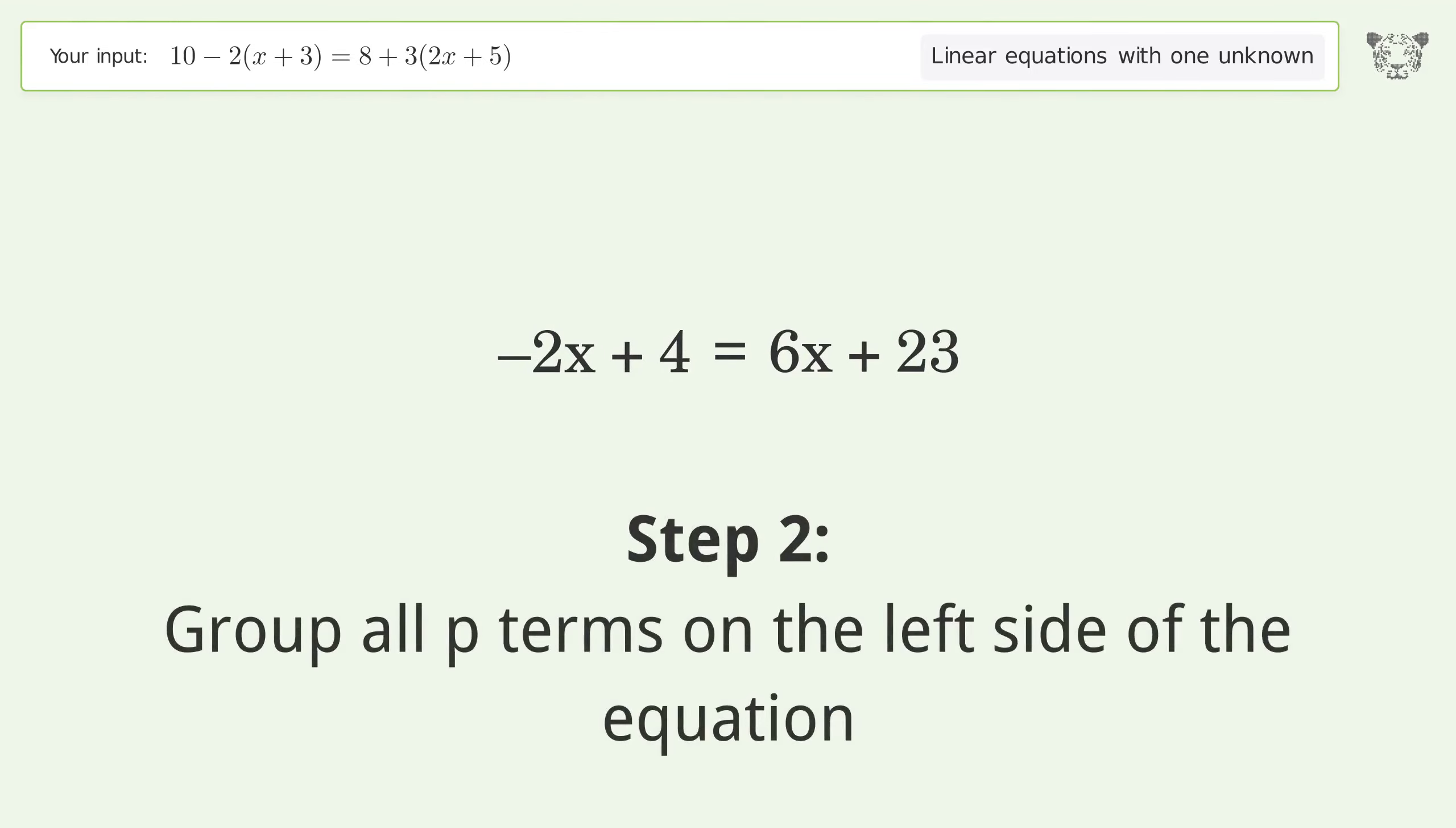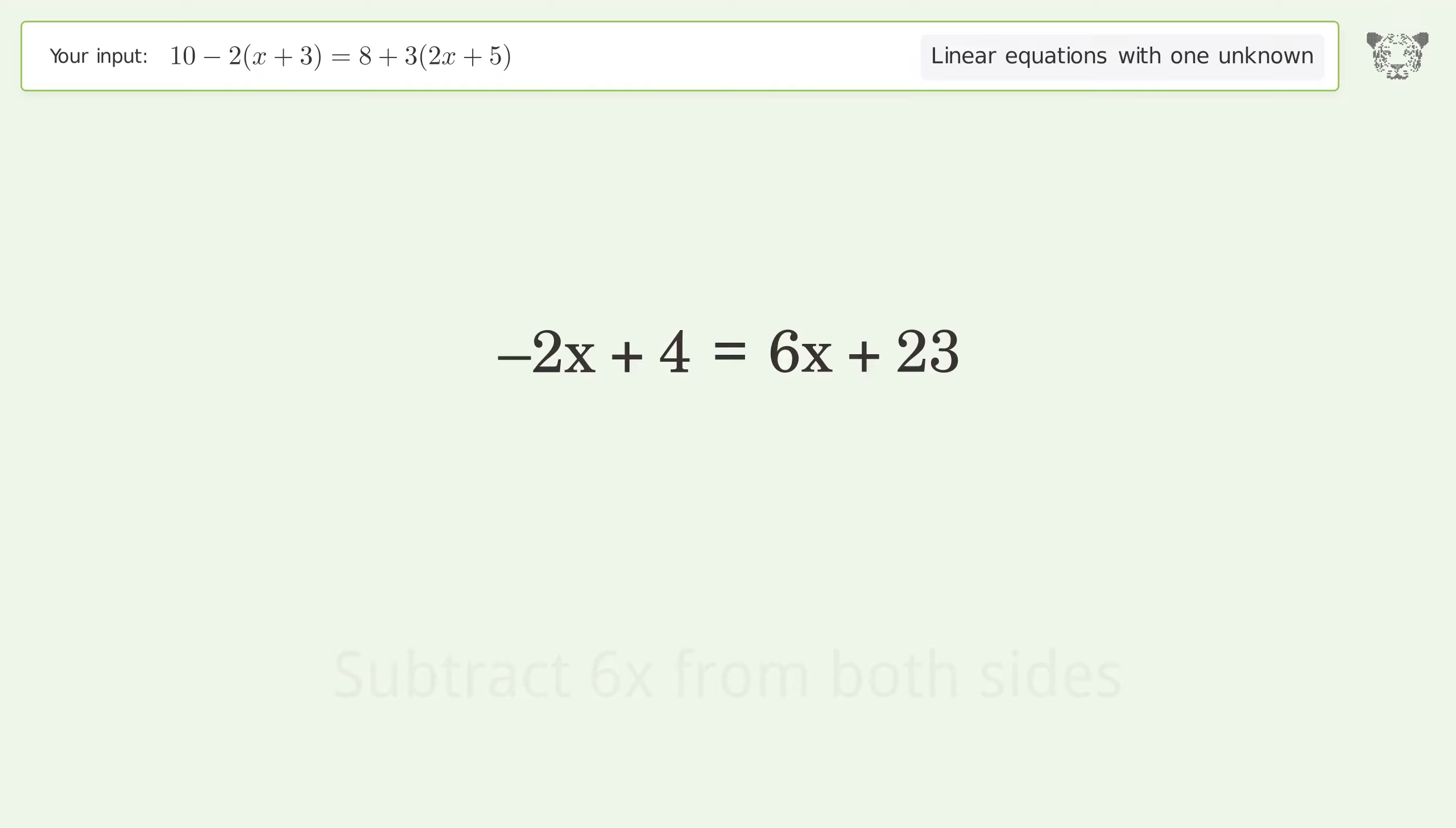Simplify the arithmetic. Group all p terms on the left side of the equation. Subtract 6x from both sides.